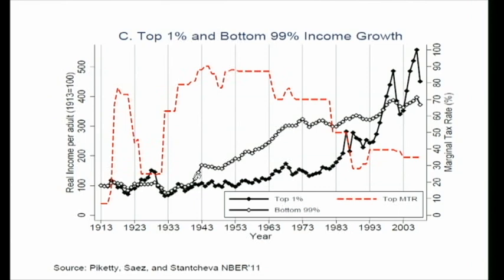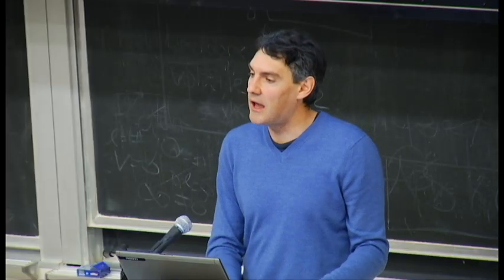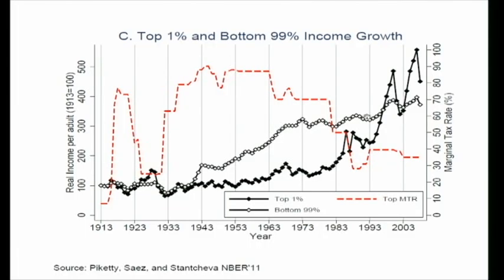What is really striking in that graph is that in periods where the top tax rate is very high — like from the New Deal to 1980 — top 1% incomes increase very slowly, while bottom 99% incomes increase very fast. When top tax rates come down significantly following the Reagan administration tax cuts, and still today, we see the exact inverse pattern: the top 1% explode and the bottom 99% grow much more modestly.